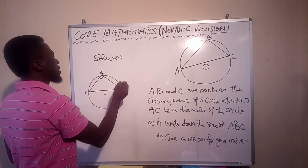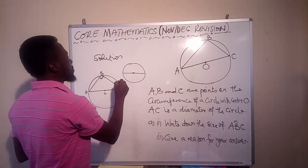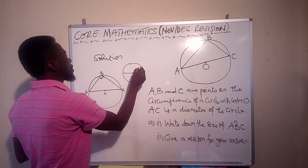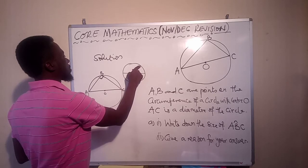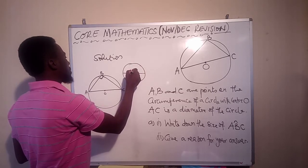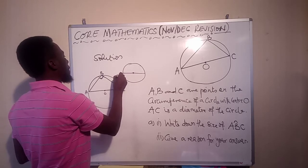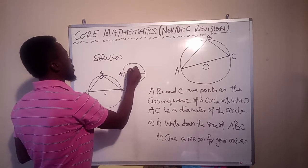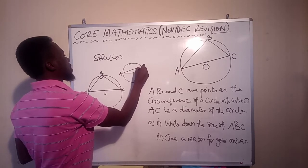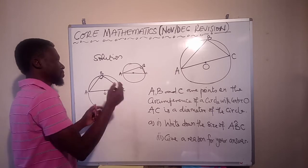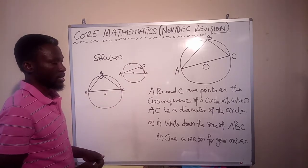Now no matter how we turn it, if we put this as a center and then this is a diameter, if I even put here A, then I put here B, and then I put here C, no matter how I turn it around, it will still be equal to, B will still be equal to 90 degrees.